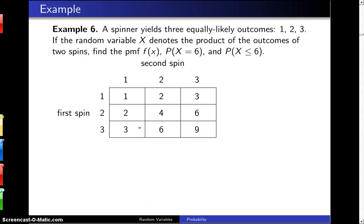A spinner yields three equally likely outcomes: 1, 2, and 3. If the random variable x denotes the product of the outcomes of the two spins, find the probability mass function f, the probability x equals 6, and the probability x is less than or equal to 6.